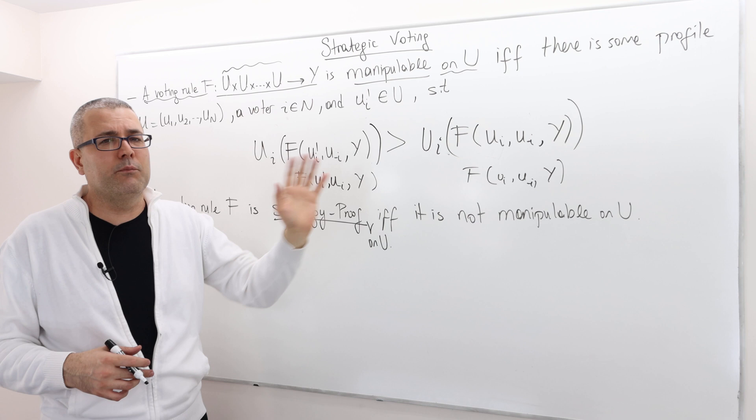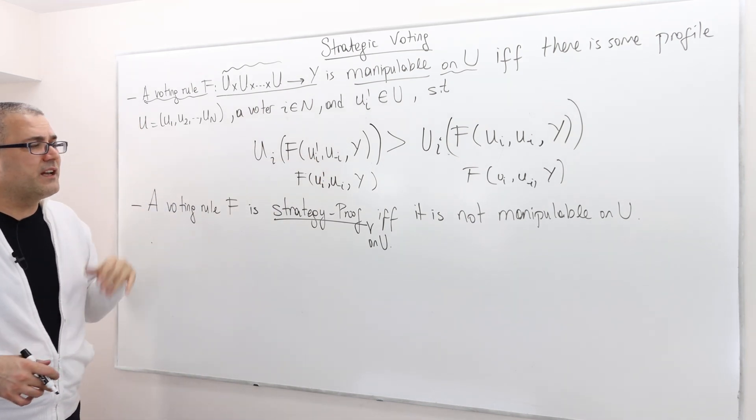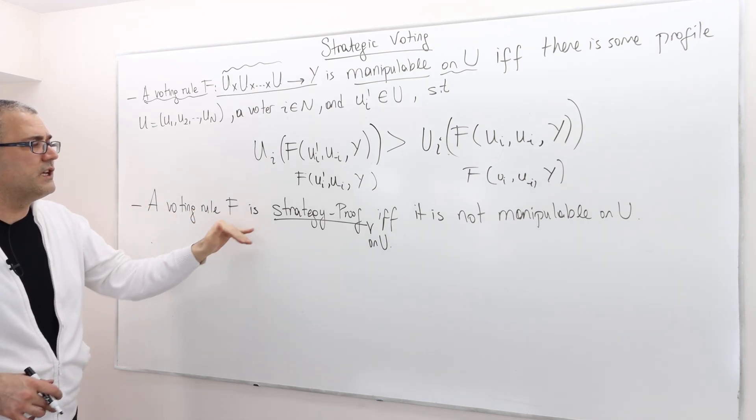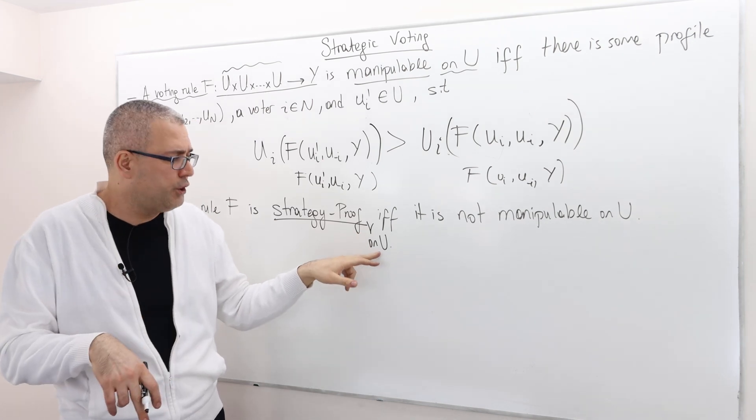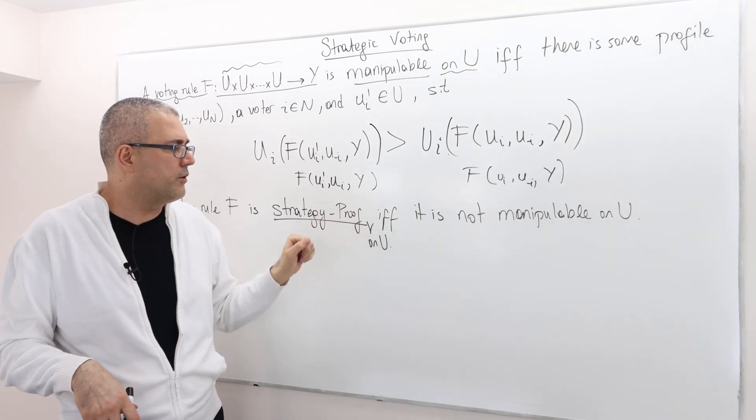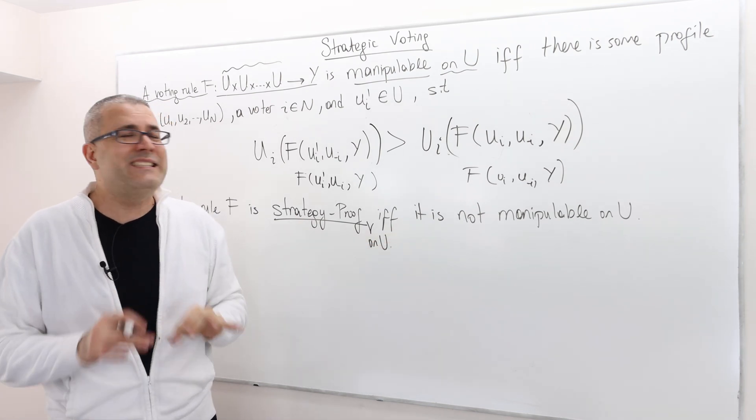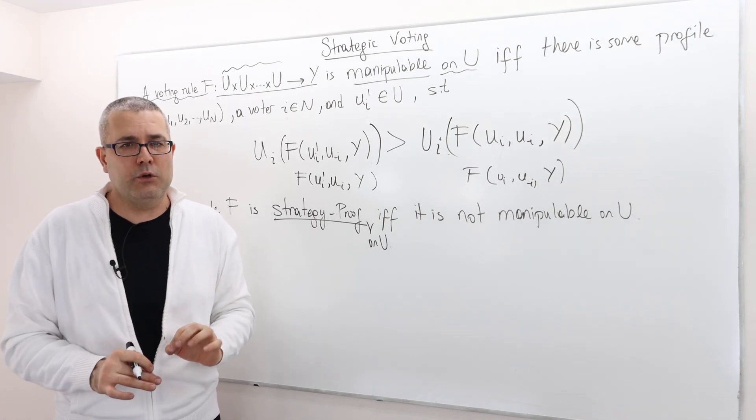Okay. That's a very, very important definition. Well, the next thing we define strategy proofness. A voting rule F is called strategy proof on some domain of preference U. I forgot it. And so I put it here. If and only if, again, this is a definition, it is not manipulable on this domain U.